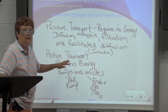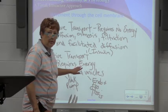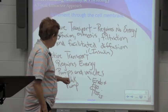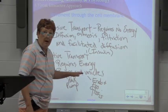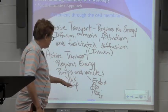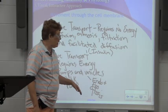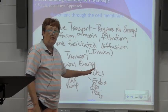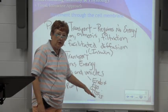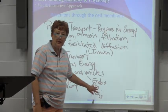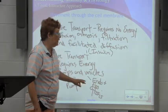Active transport does require ATP — it requires an expenditure of energy. A couple of examples include the pumps: we have a sodium-potassium pump that we're going to talk about in detail. Another example is vesicles, which can either be endocytosis or exocytosis, and we're going to talk about those two things.